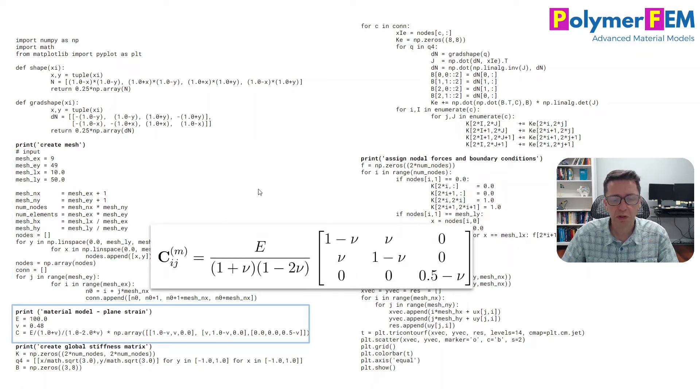Next one is to specify the material and we need to have the C matrix which we derived as shown here. E and nu the Young's modulus and Poisson's ratio. This is for plane strain. If you have plane stress axisymmetric, there will be a slightly different form of this. But this is how the C matrix is calculated in Python here.